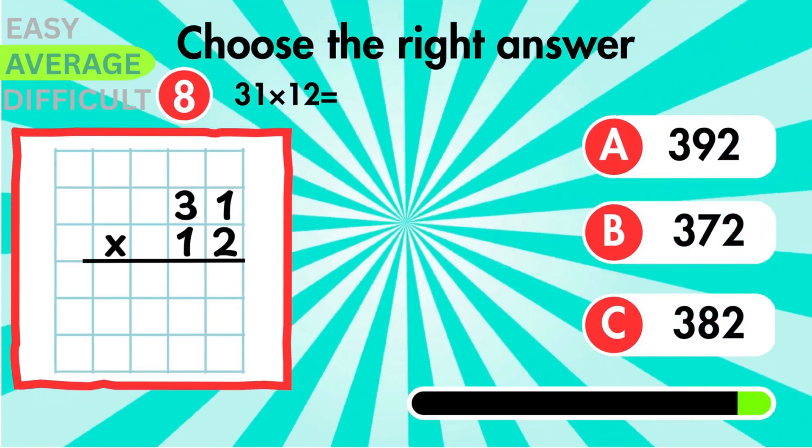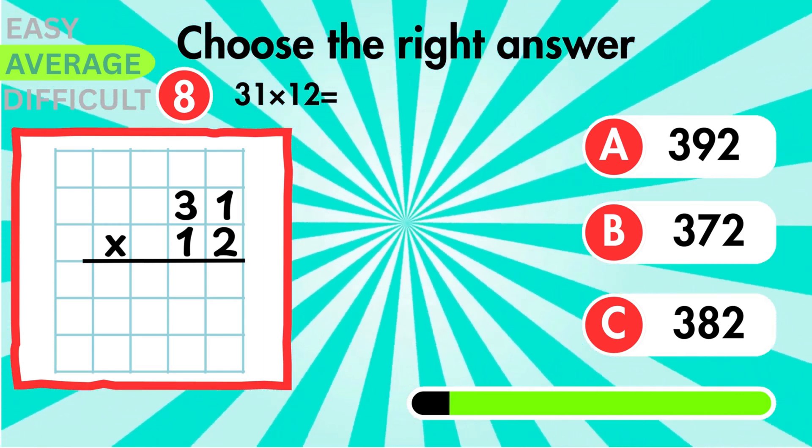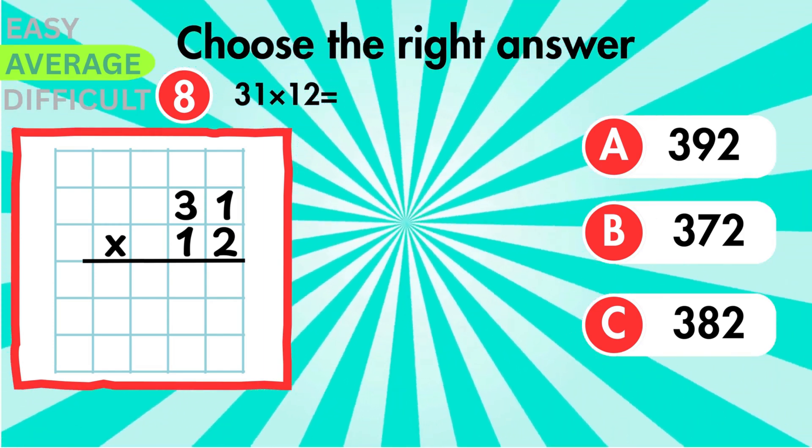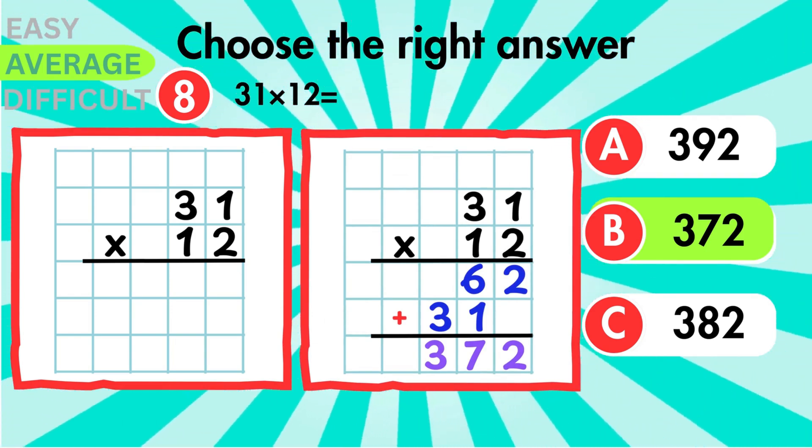Find the product of 31 and 12. Take your time adding the two partial products. The value is 372.